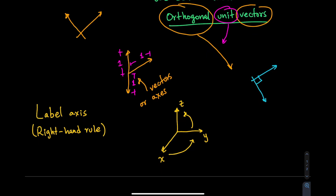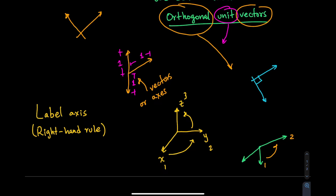You can start at any letter or number — for example, 1, 2, and 3. Just make sure you're going counterclockwise to the next direction. If when going counterclockwise you cannot find the next axis, it means you've defined it in the opposite direction and need to correct it so that the counterclockwise rule is satisfied.